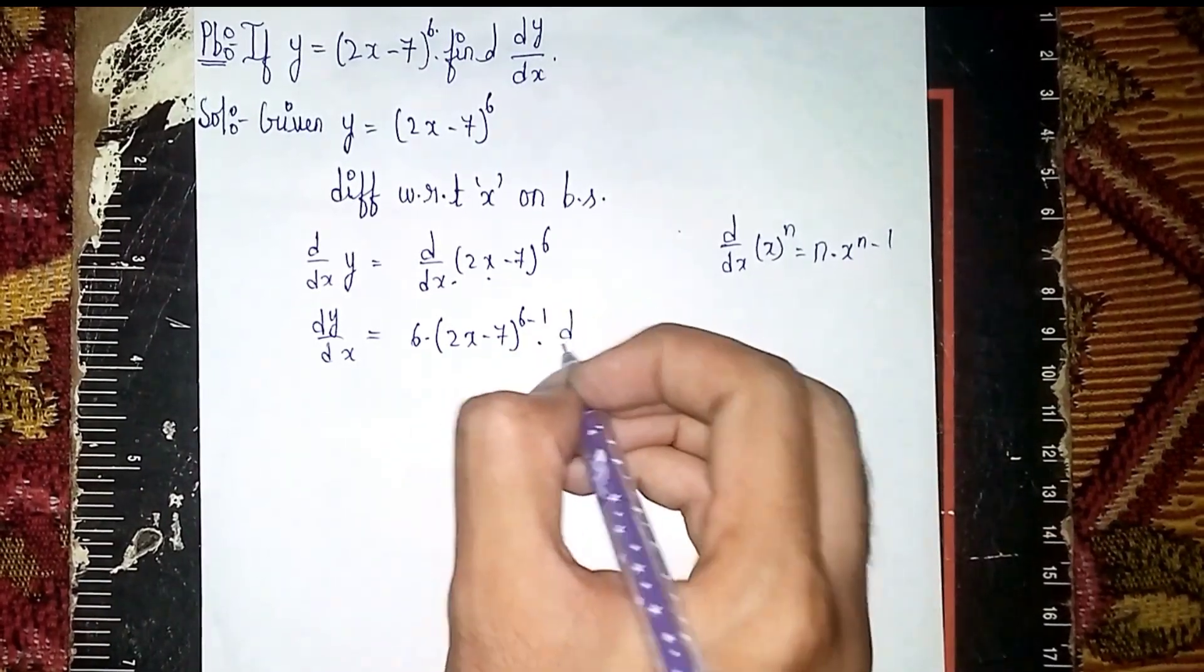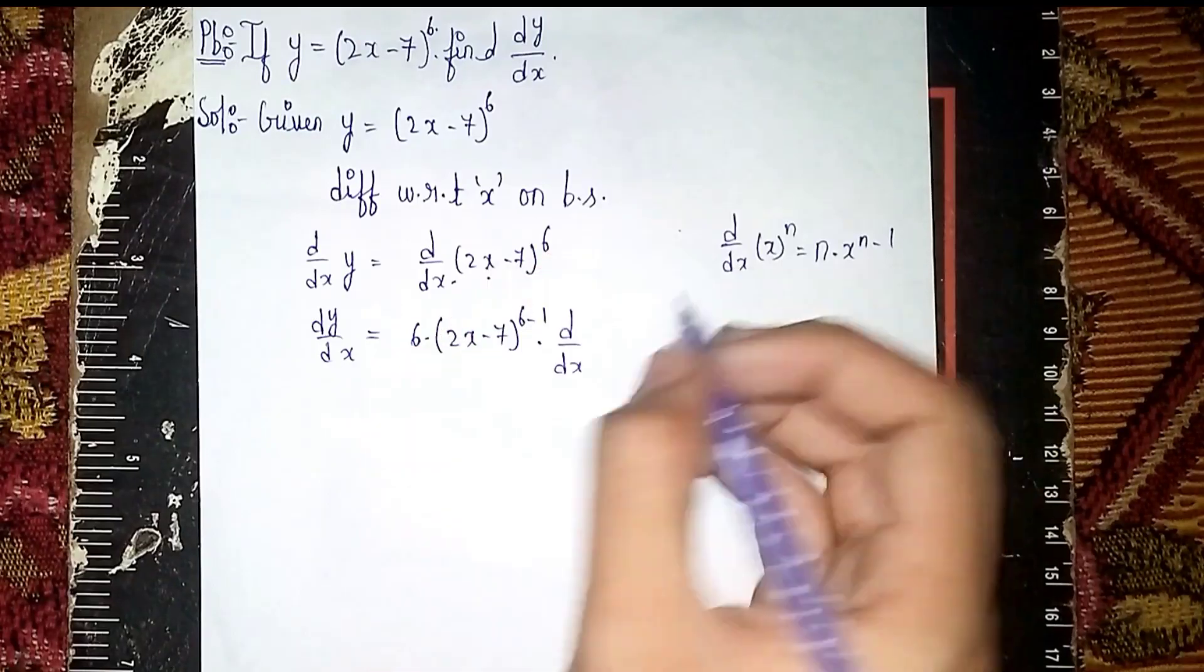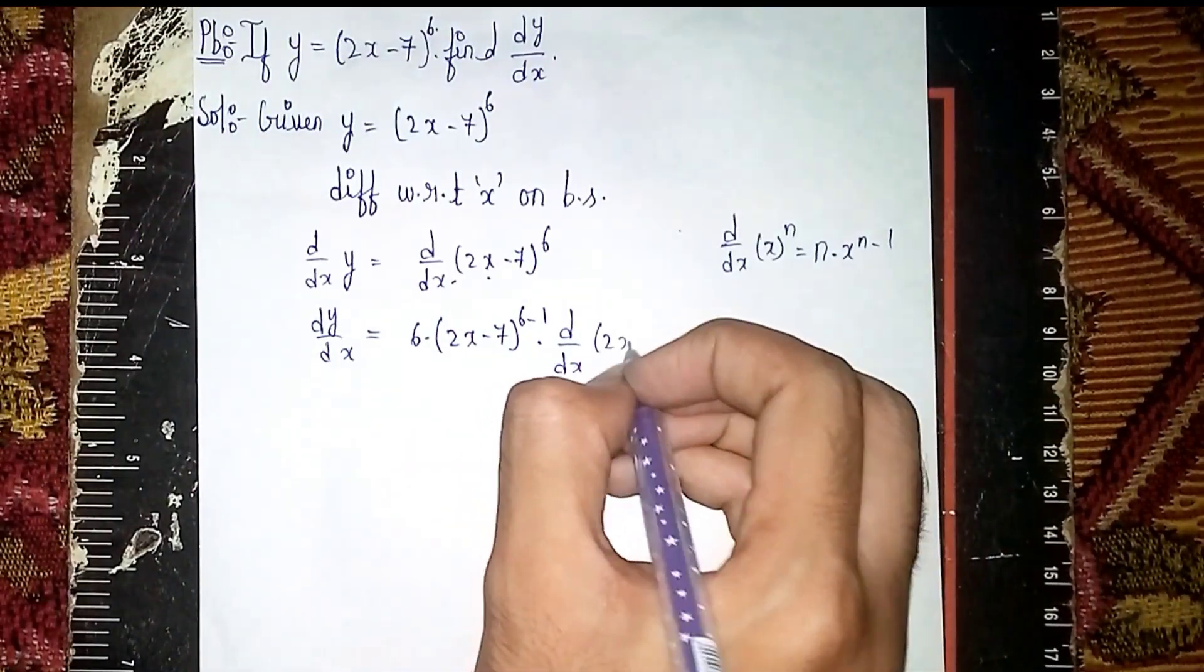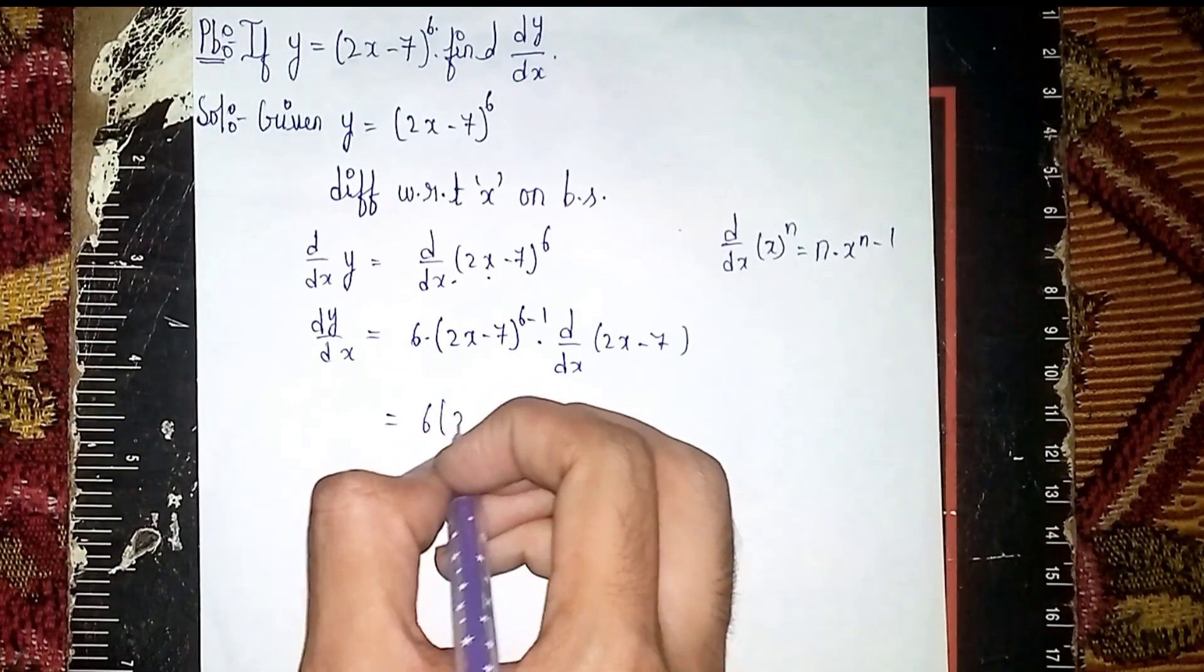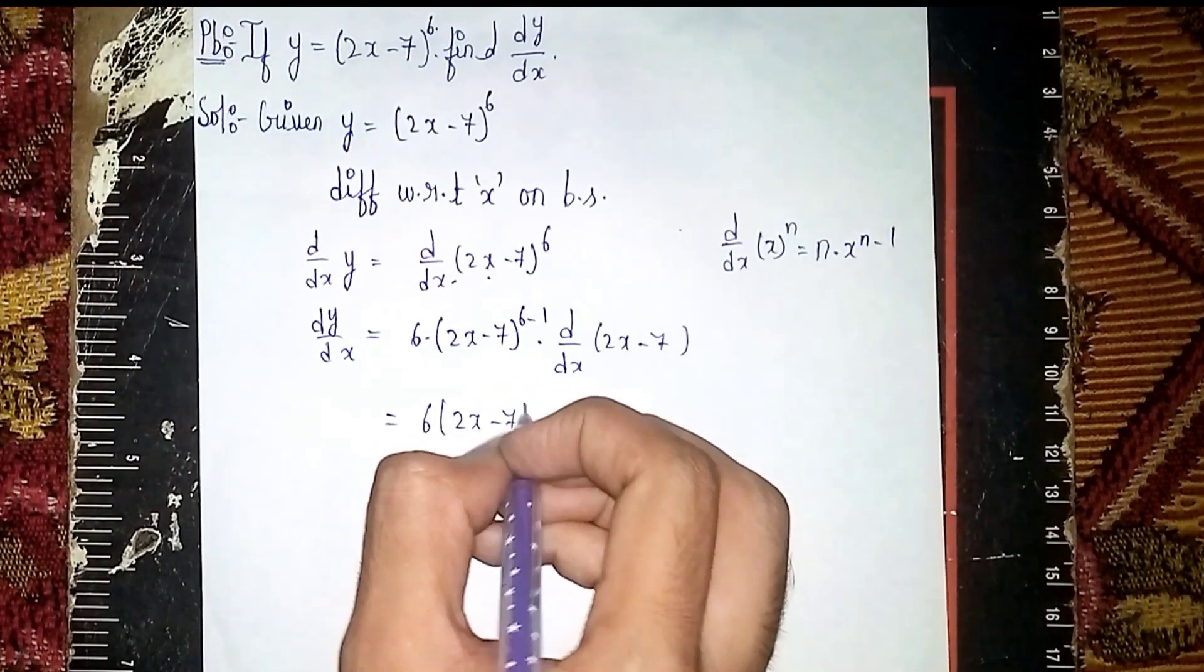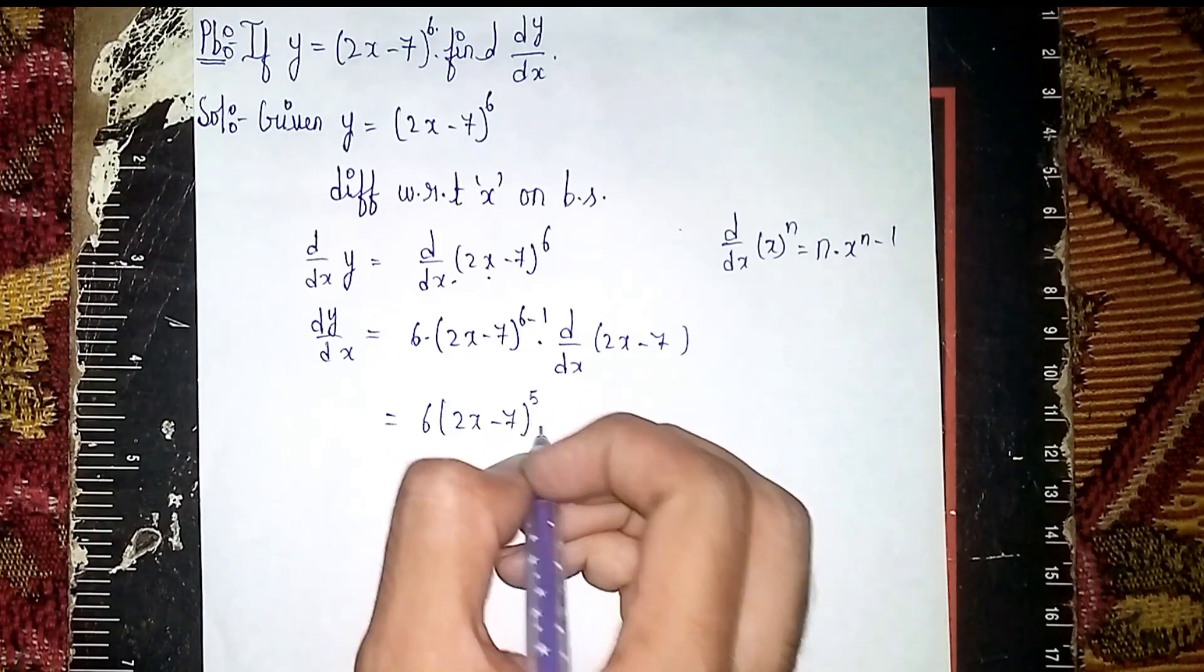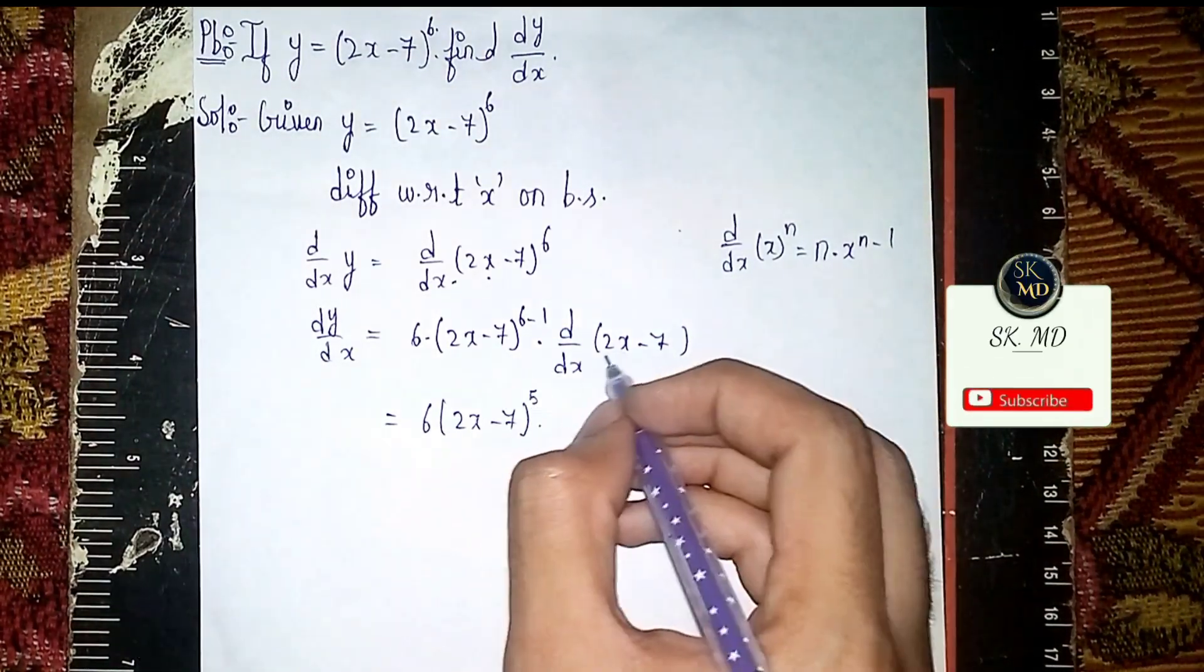Into d/dx - now I have to differentiate the inner term, which is 2x - 7. It becomes 6·(2x - 7)^5 into...